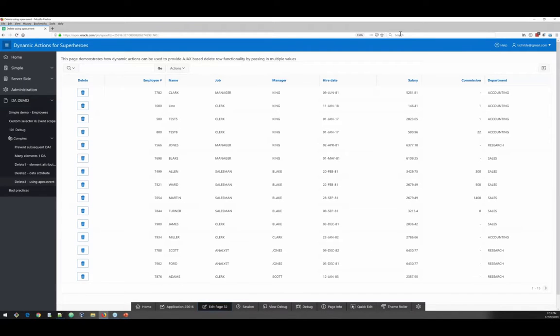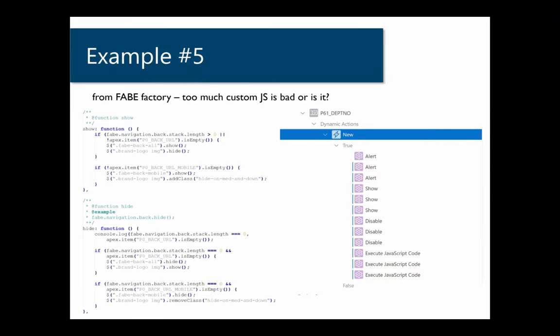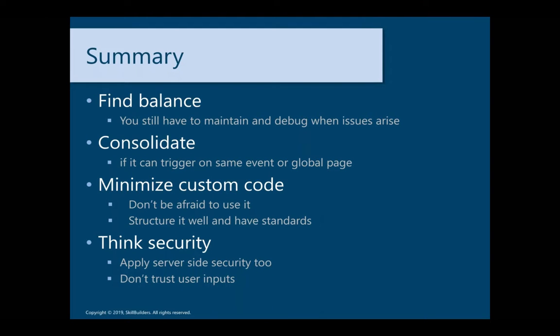One key takeaway is: do you go JavaScript all the way, or do you go declarative? There's no single answer — it's about how you prefer to code, but find a good balance. It's not just about us as developers; it's about who's going to maintain it after we leave. Another point is to consolidate — you can have multiple true actions on a certain event, so think about whether you can consolidate into one event or one action instead of having many.